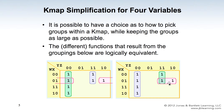As long as you follow the rules of the KMAP for grouping values of ones together, you will get a valid simplified boolean function. That's some brief information to guide you on how to use KMAP simplification for four variables.